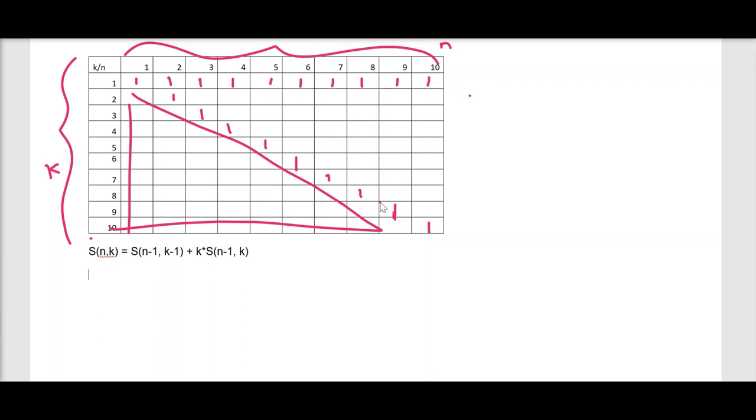Look now, for this value, for this cell we need k = 2 and n = 3. Just fill in, substitute in this column so that you will get S(3,2) = S(n-1, k-1) which is S(3-1, 2-1) + k × S(n-1, k) which is 2 × S(3-1, 2). You will get it as S(2,1) + 2 × S(2,2).